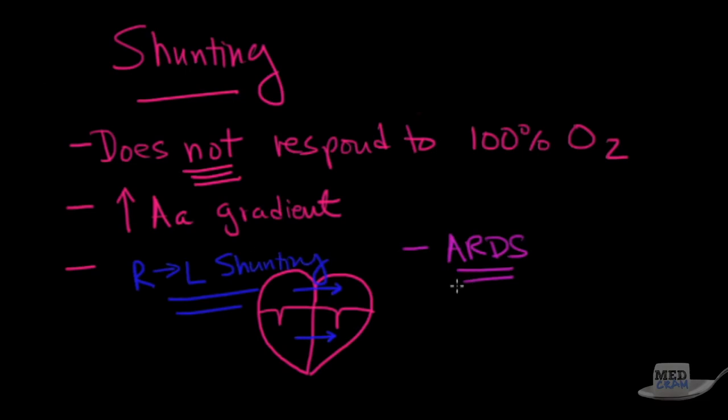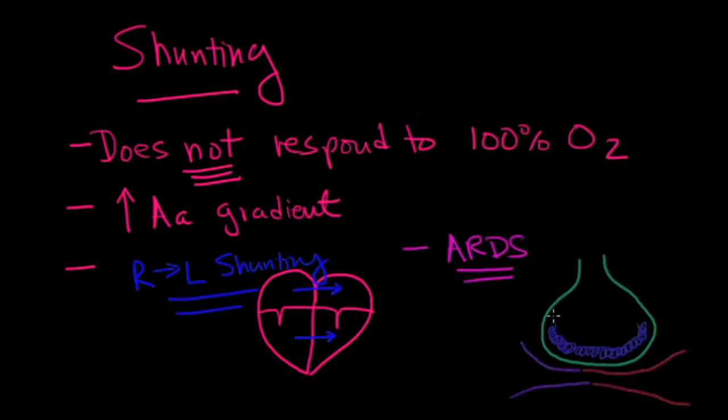I can think of another reason why you could have right to left shunting, and that would be something called ARDS. In ARDS, Acute Respiratory Distress Syndrome, this is a situation where a lot of high protein fluid leaks out into the alveolus. You can imagine there's just fluid in the alveolus. When oxygen tries to get down there, there is no oxygen that can come through, and as a result, this deoxygenated blood goes right through without seeing any oxygen whatsoever. That's another way you could have shunting. Pulmonary edema could also do this.